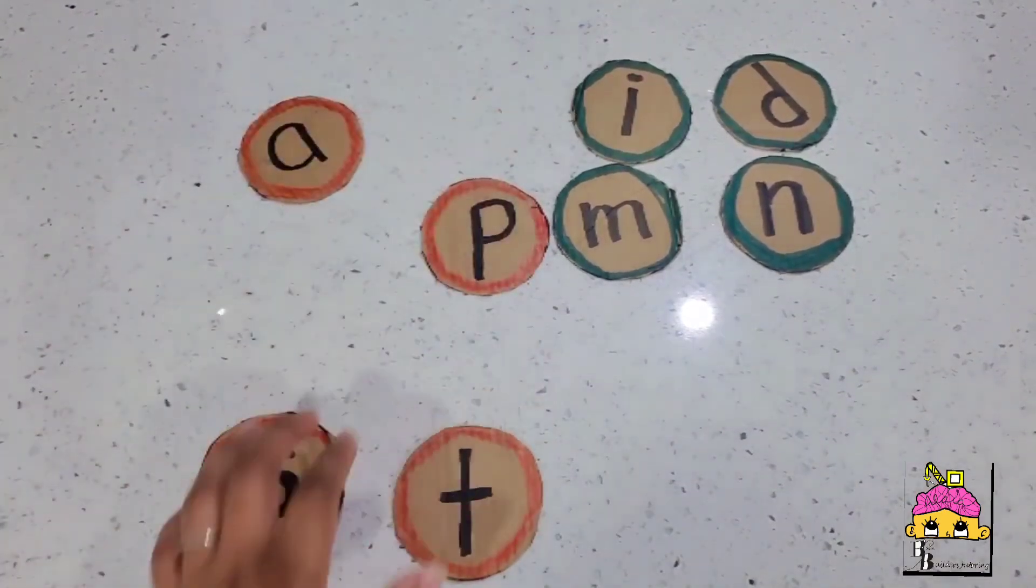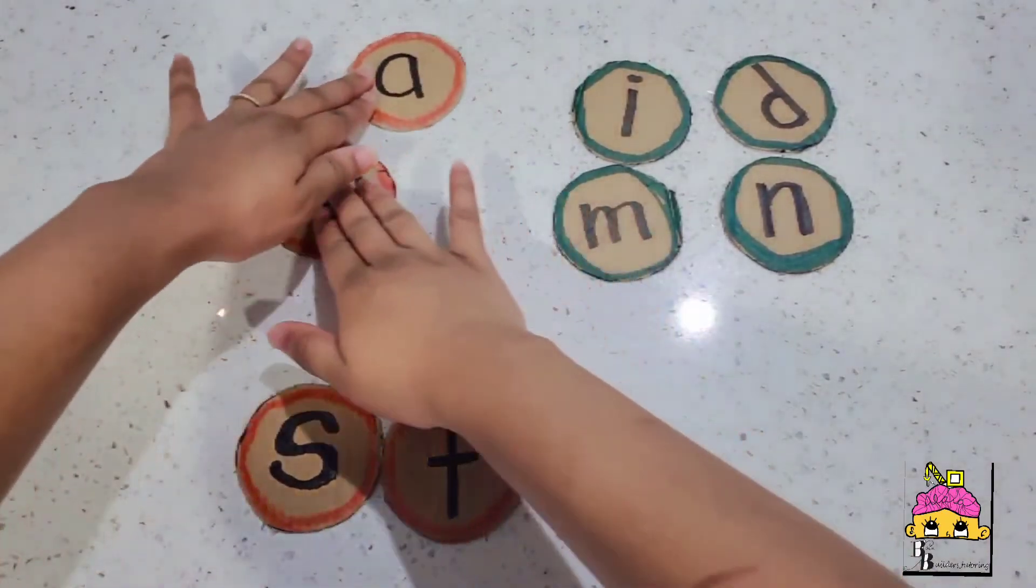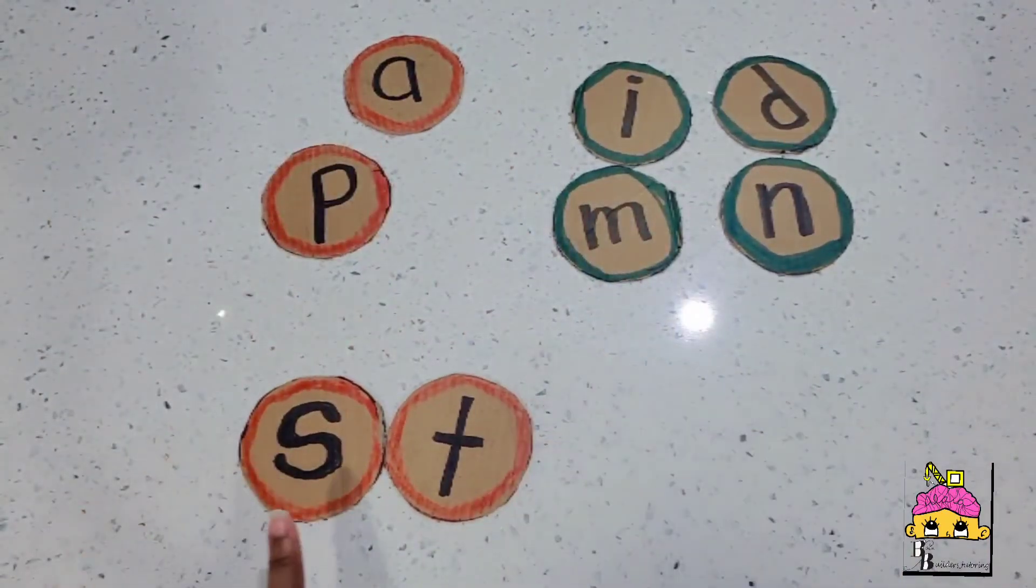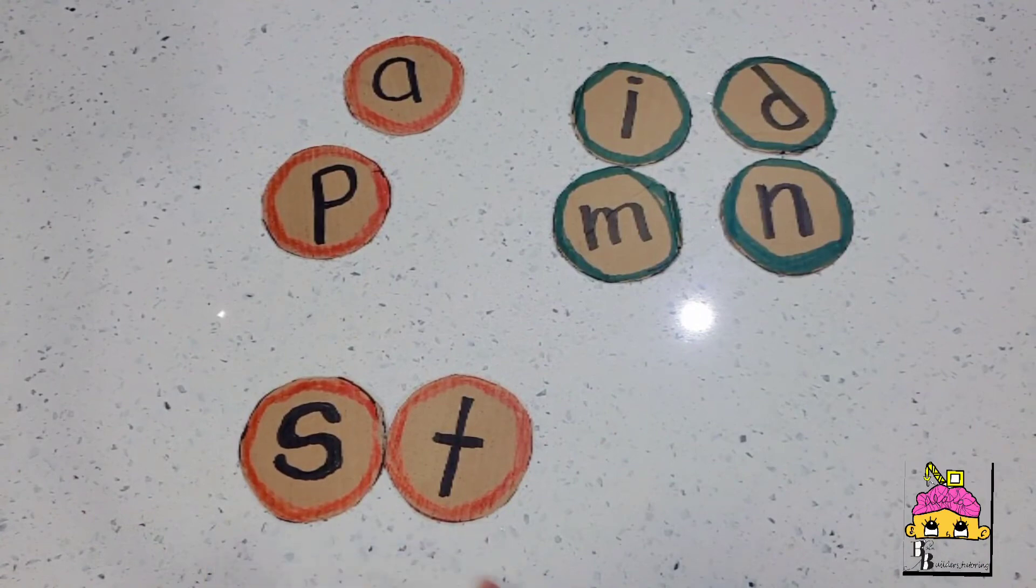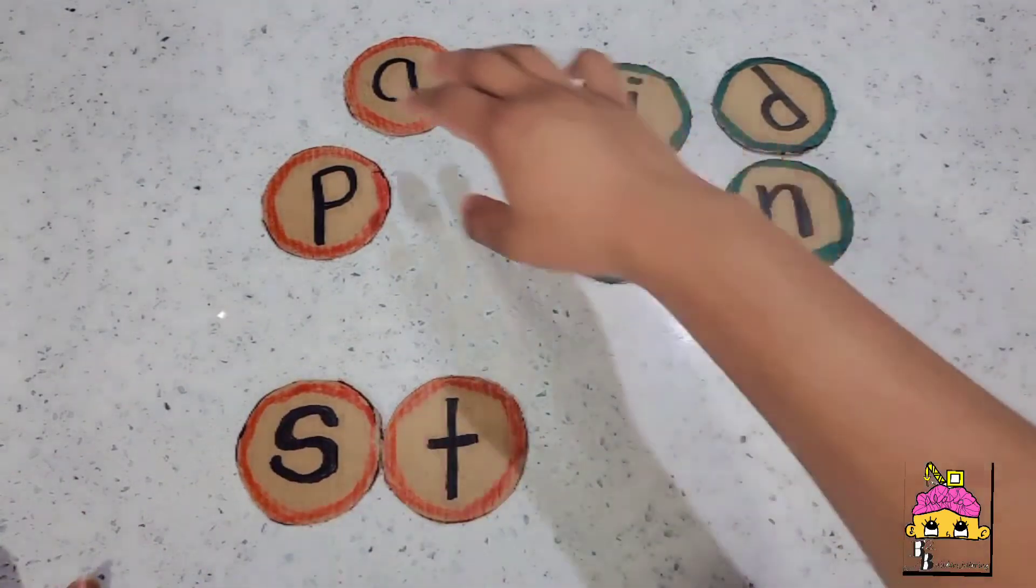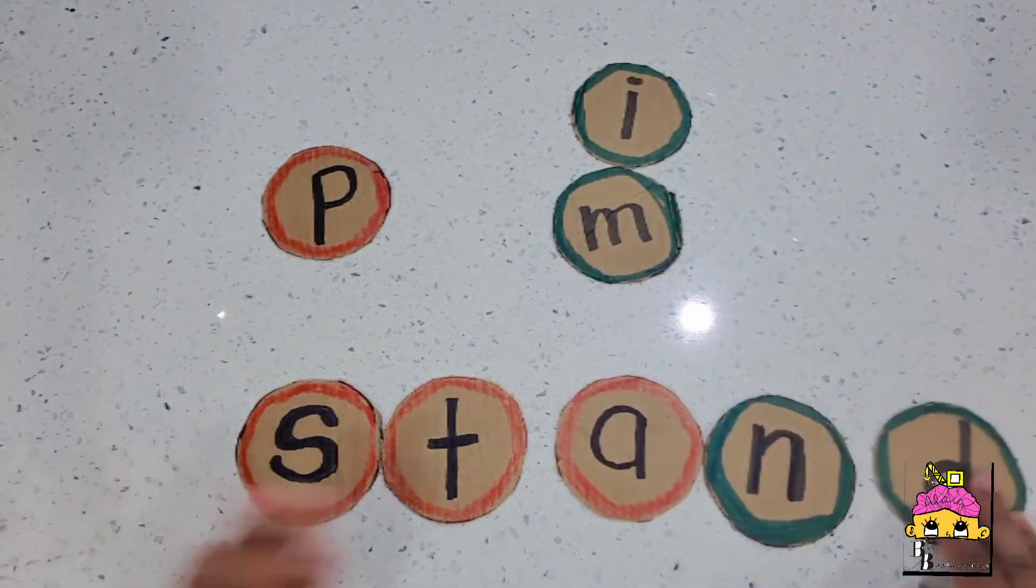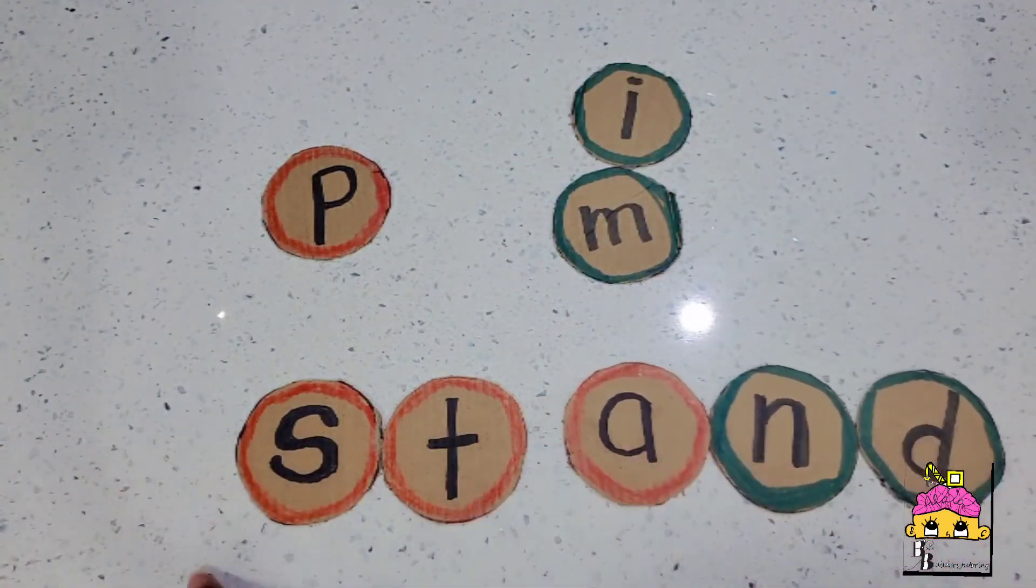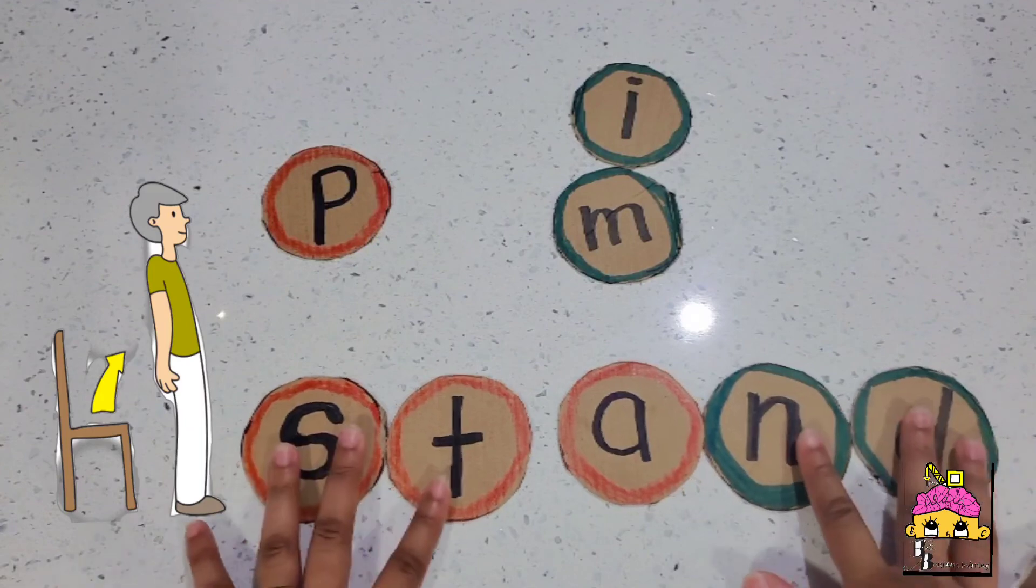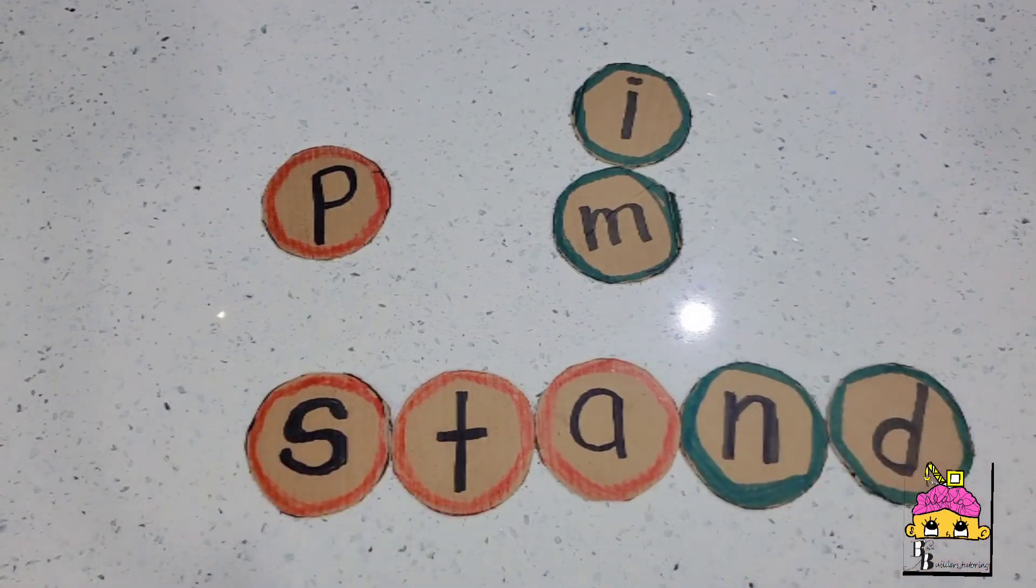Now as your child gets fluent in the CVC words, you could start word blending. So word blending is taking these two letters, for example S, T, gives us the st sound, then we have and, so st and, stand. These are for the older children.